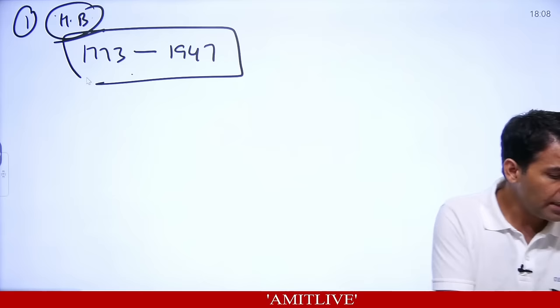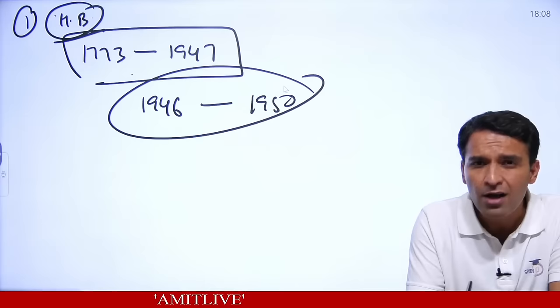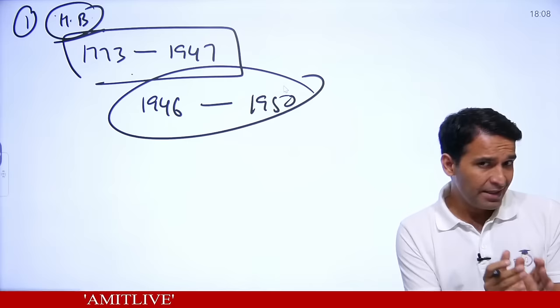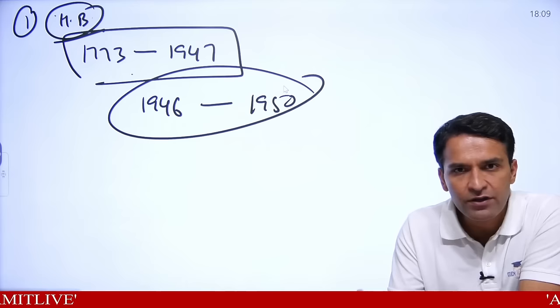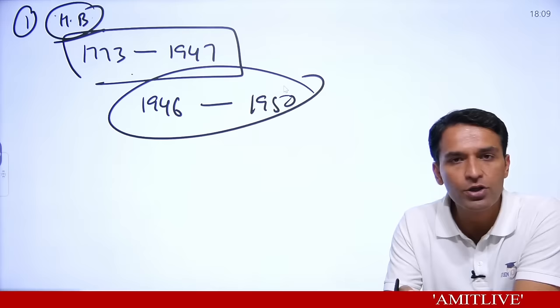Our purpose now is to understand the making of the constitution from 1946 to 1950. In 1945, after World War II, Britishers realized they had to leave India. The question in front of them was: how to transfer power to Indian hands? This was the dilemma of the 1940s.